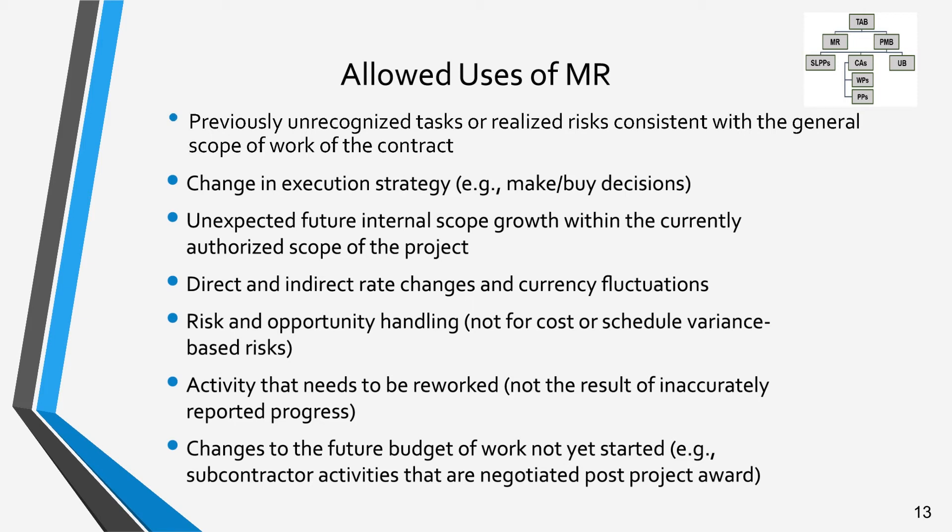MR may be used for risk and opportunity handling. However, allocating MR for cost or schedule variance-based risks is inappropriate. MR may be used for work that needs to be repeated; however, it is not appropriate to be added as budget when progress has been inaccurately reported. MR may be used to change future budget for work not yet started. For example, the baseline may have been estimated prior to final negotiations of subcontractor work. MR may be used to increase the budget associated with final negotiations, however not if the effort has begun.